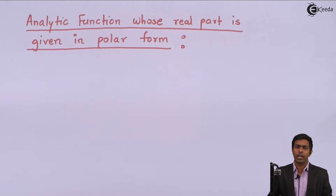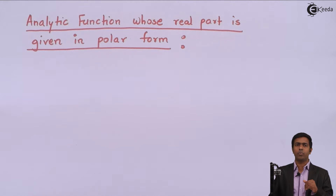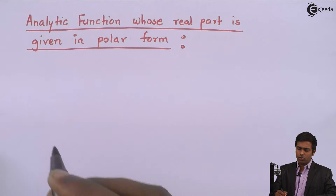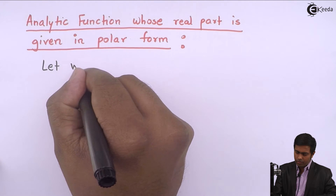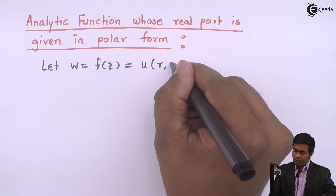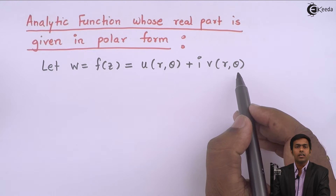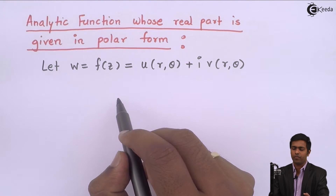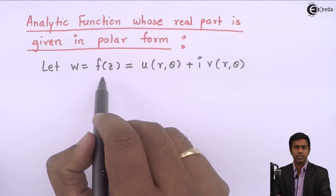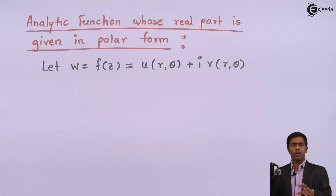Hello friends. In this video we are going to learn a new concept of finding the analytic function whose real part is given in polar form. We will assume one analytic function in polar form. Let's say W, that is F(Z), is an analytic function given by U plus iV, where U is the real part and V is the imaginary part in terms of R and theta, that is in polar form. To get the analytic function F(Z) when only U is given and V is not given, we are going to follow certain steps.